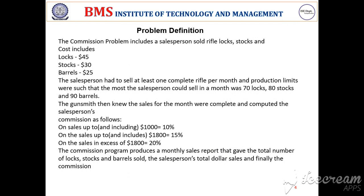For the Commission Problem, it is defined as follows. Locks cost $45 each, stocks cost $30 each, and barrels cost $25 each. The salesperson has to sell at least one complete workflow per month, and the maximum he can sell is 70 locks, 80 stocks, and 90 barrels.